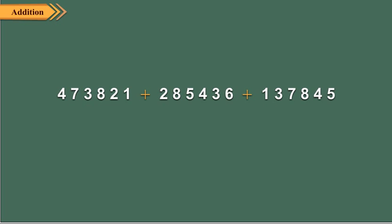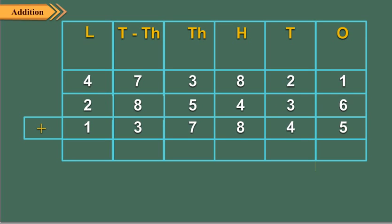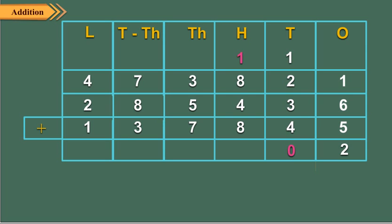Let us now add three 6-digit numbers. Arrange the numbers in columns. Add the ones digits: the ones digits sum to 12 ones, which is equal to 1 ten and 2 ones. So we write 2 in the ones column and carry over 1 to the tens column. Add tens: 1 ten carried over plus the tens digits is equal to 10 tens, which is equal to 1 hundred and 0 tens. So we write 0 in the tens column and carry over 1 to the hundreds column.